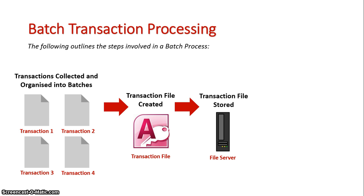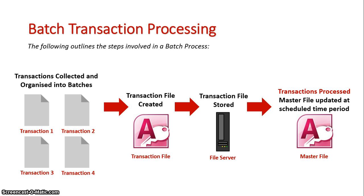This transaction file is saved and stored somewhere on the network — it can be saved in a database, in a cloud, or some sort of storage, especially for a wide corporation. When the specific date comes for the actual batch processing to take place, it then occurs and gets updated into a master file. All the transactions that have taken place over the last week get processed, the master file gets updated, and everything is brought up to date.